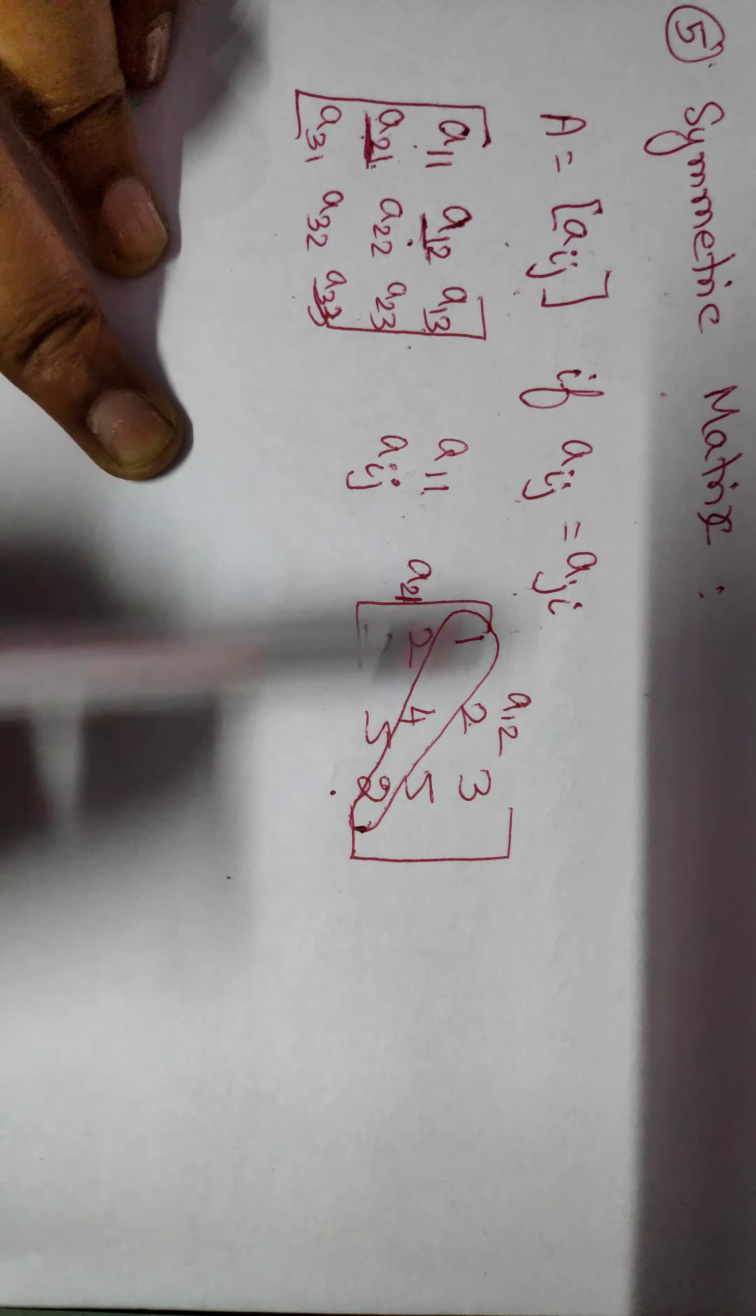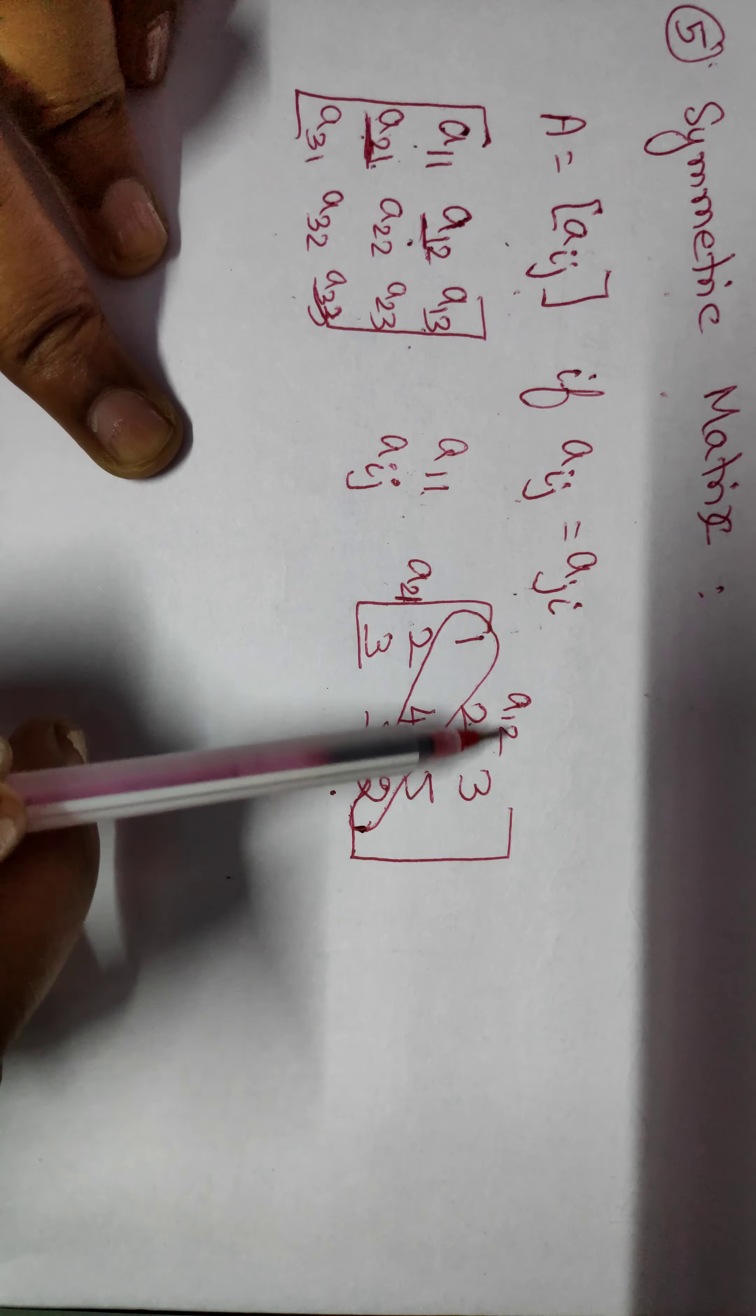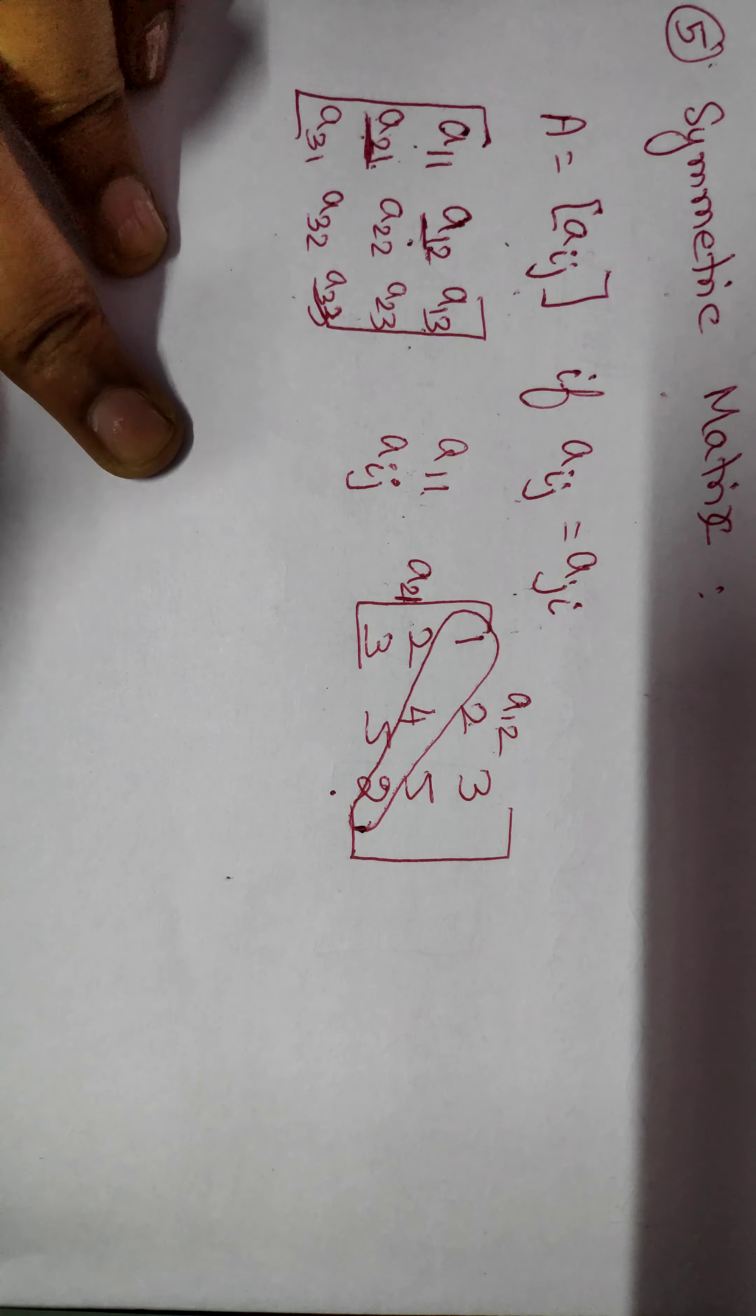So, Aij - because this is 12, this is 21. This is interchangeable: ij and ji. These two values equal, then it is called symmetric.